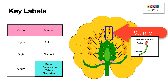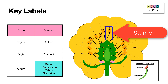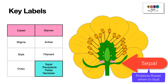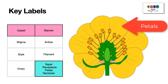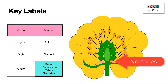Then there are the rest of the flower parts: those green structures, the sepals, that protect the flower when it's in bud. Then you have the receptacle down in the middle of the flower, the petals which in this case are brightly coloured to attract pollinators such as bees. Some flowers also have nectaries, which produce a sugary substance that attracts pollinating insects.